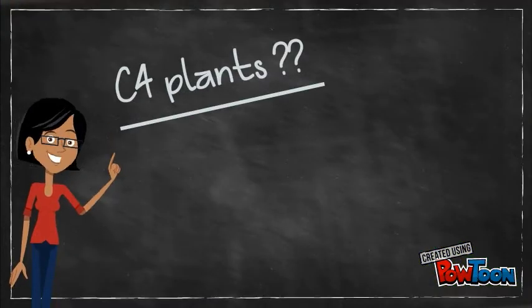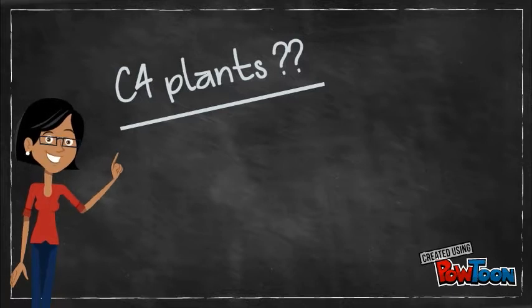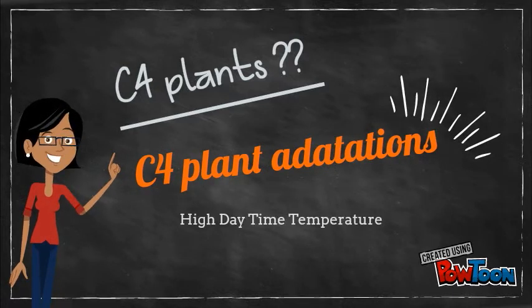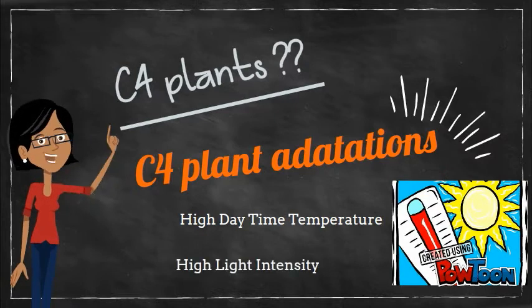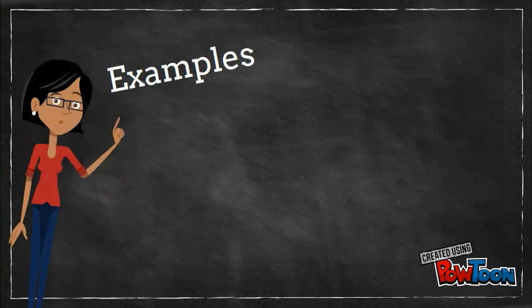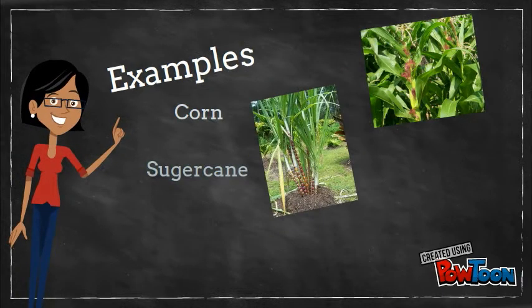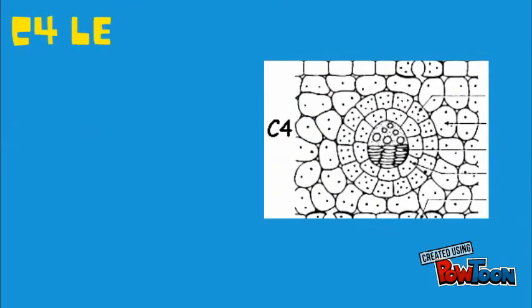What are the C4 plants? C4 plants use a supplementary method of CO2 uptake which forms a 4-carbon molecule. These plants are called C4 plants. C4 plant adaptations include high daytime temperature and high light intensity. Some examples of C4 plants are corn, sugarcane, and sorghum.